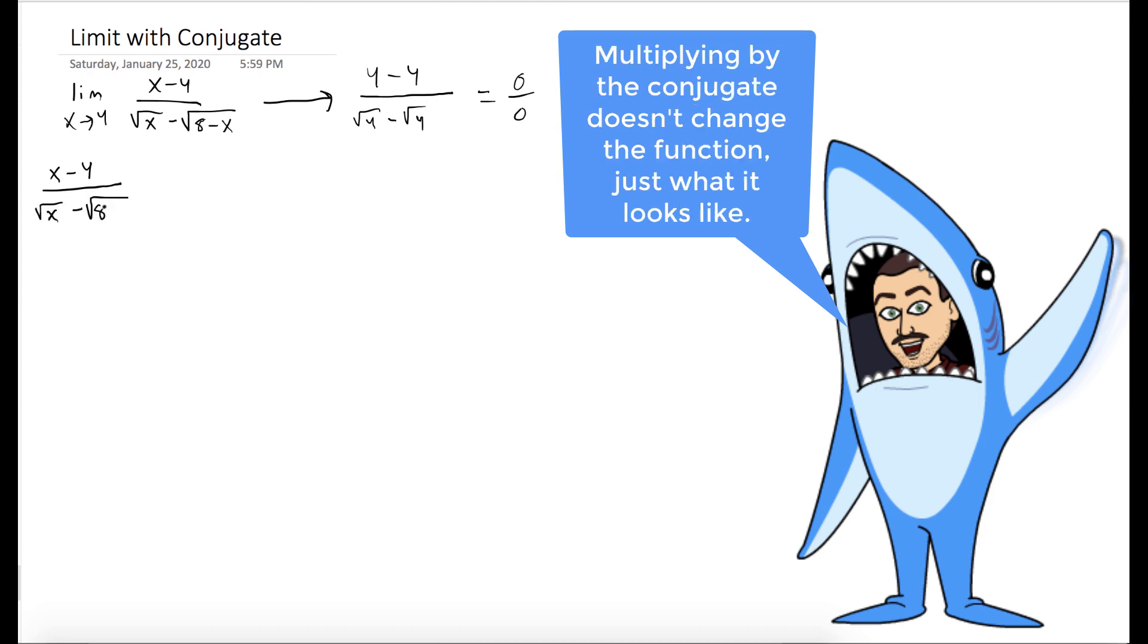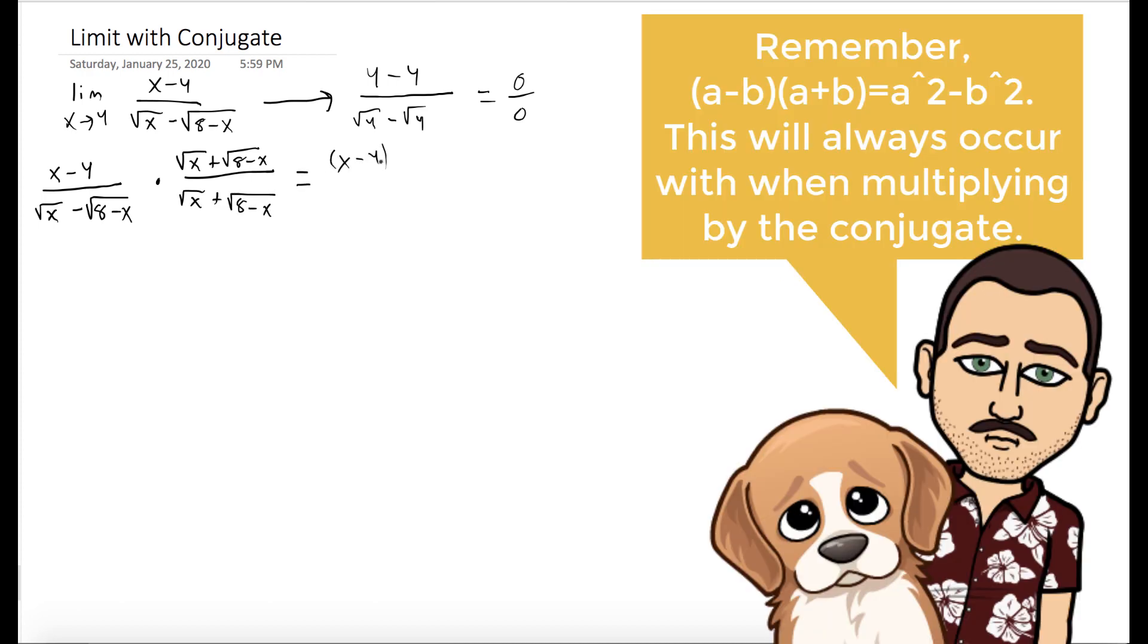Since we have square roots, it's natural to try to multiply by the conjugate to see if that could maybe shake the box a bit and make the question easier. The conjugate here is the square root of x plus the square root of 8 minus x. And we have to multiply that to both the numerator and the denominator.